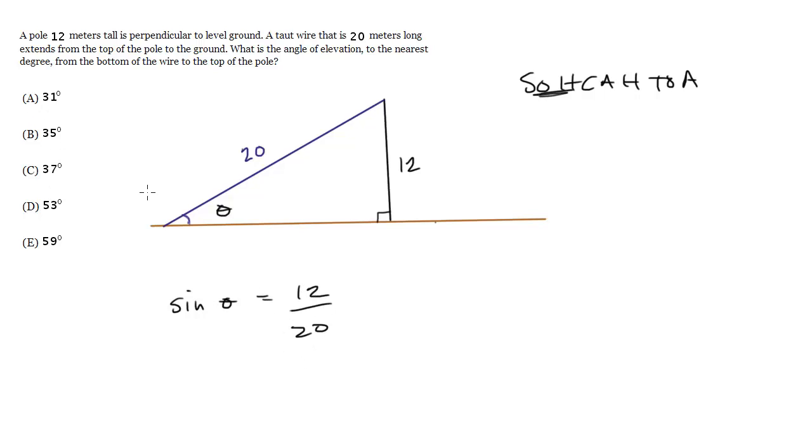You could take your angles, plug them in for sine of theta and see which one equals 12 over 20, or you could do inverse sine. If you inverse sine both sides, that will give you theta directly. So theta equals inverse sine of 12 over 20.